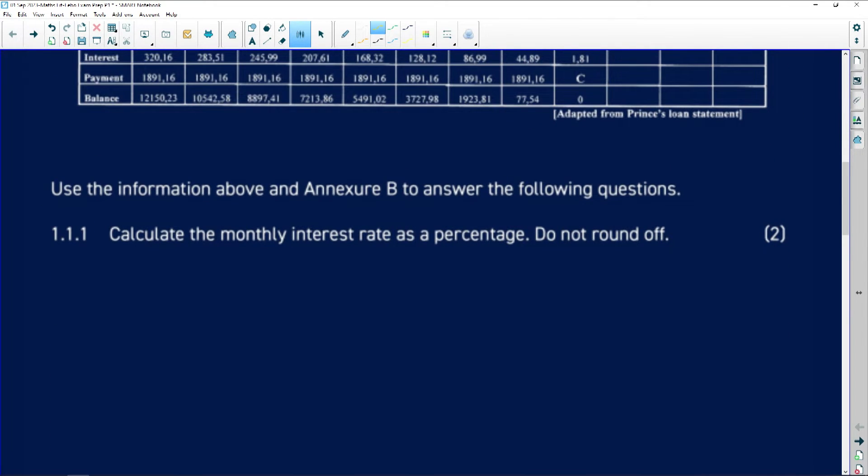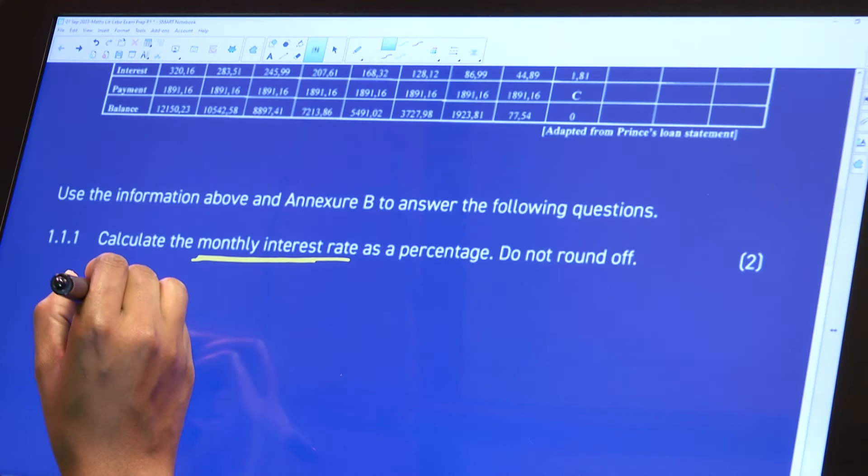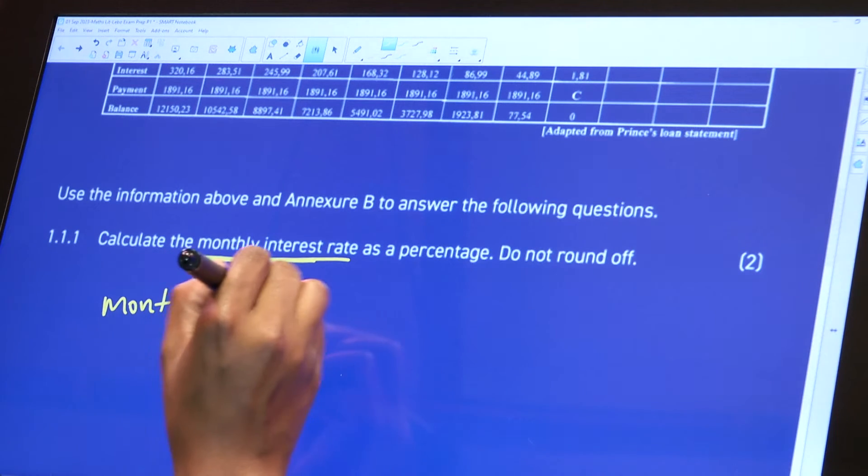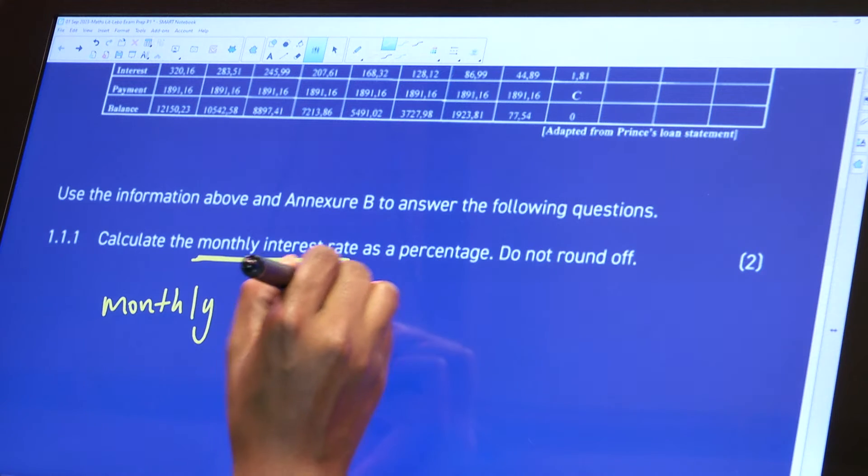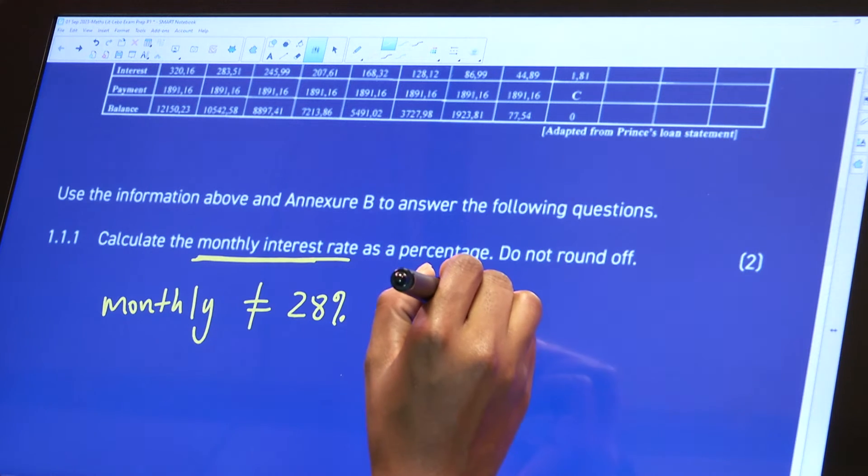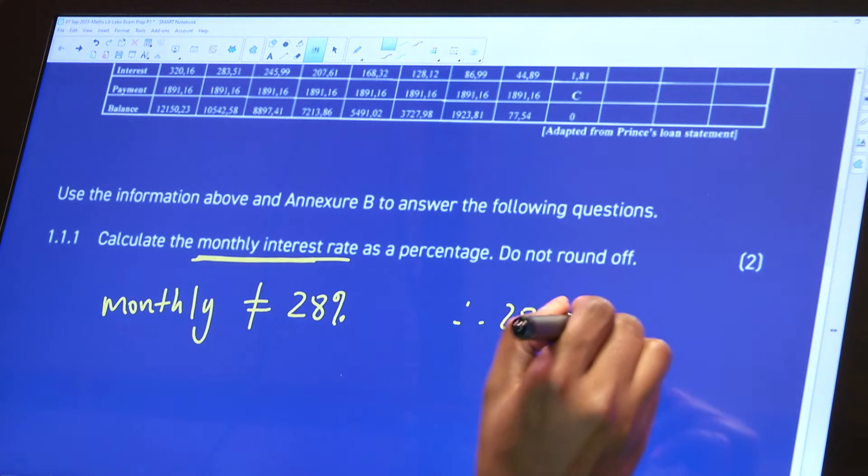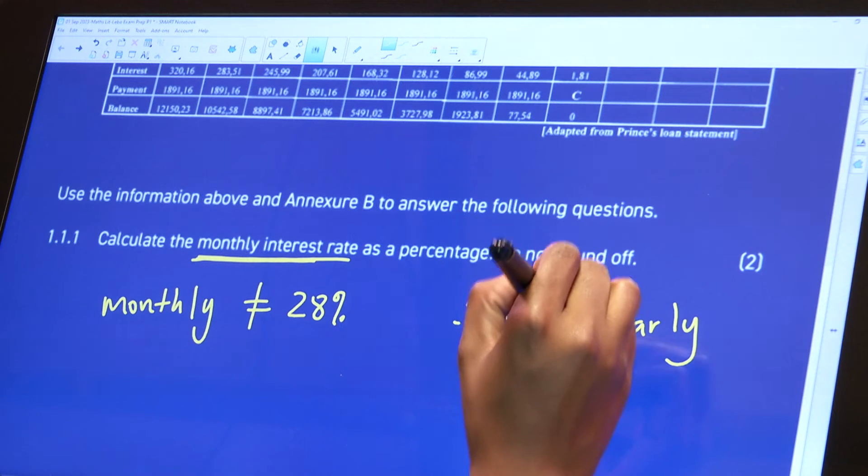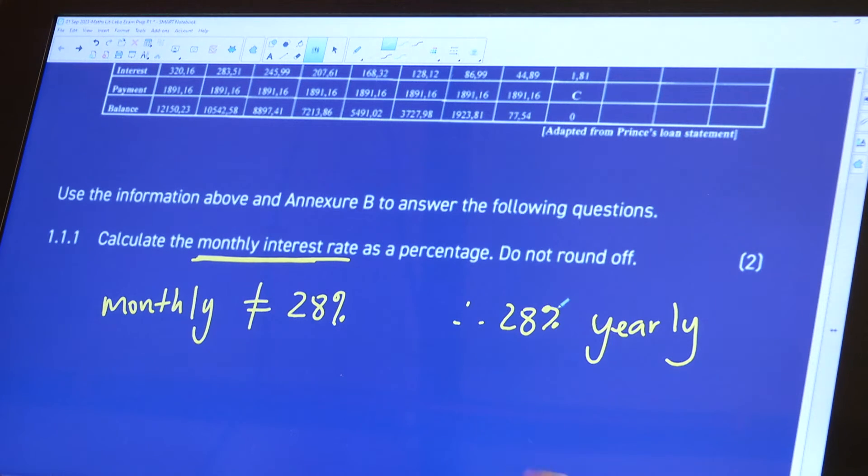So what I meant initially was that monthly interest rate is not going to be 28%. So for the monthly, it's not going to be 28% because this 28% is actually for yearly. So that's percent, that's actually per annum. Just be careful when it comes to that.